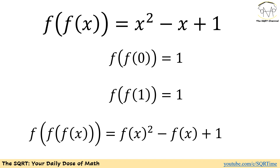Since we see that f of f of 0 equals 1, the next thing we are going to try is what happens if we use x equals 1. If we do this, we will end up with f of f of 1 equals 1. Now, to find f of 0, I'm going to apply another function f on both sides.